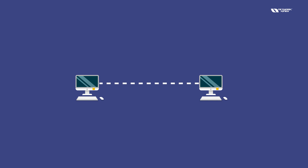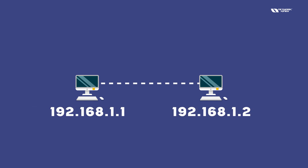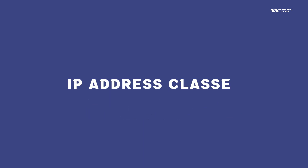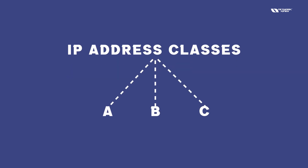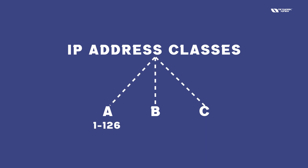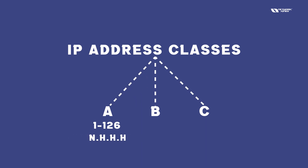I'm going to assign an IP address here, so I'm going to explain IP address classes. We have three classes: Class A, B, and C. When any IP address starts from 1 to 126, you need to match the first part, which is the network part.